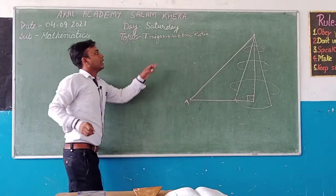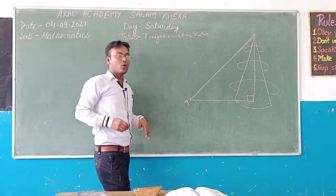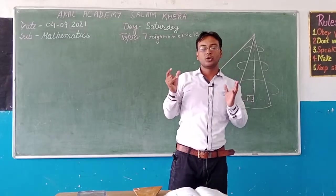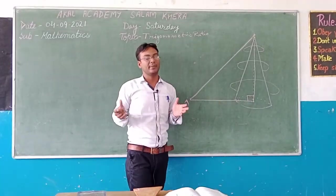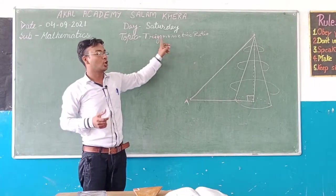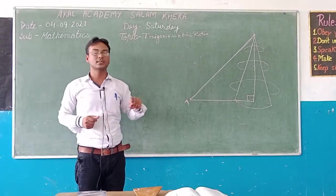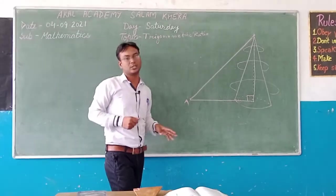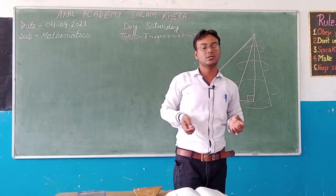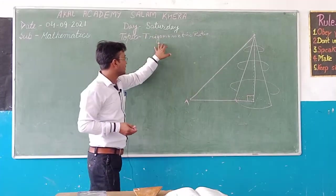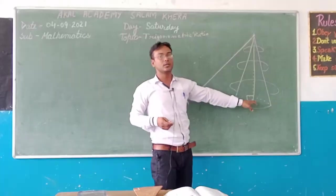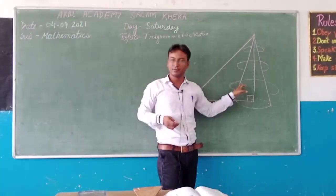The word trigonometry comes from three words: tri, gon, and metron. Tri means three, gon means sides, and metron means measurement. So trigonometry means measurement of three sides, and here in a right angle triangle we will work with these three sides.